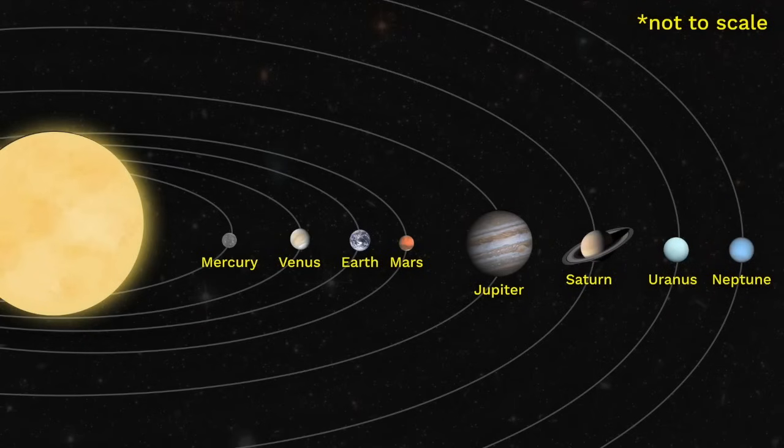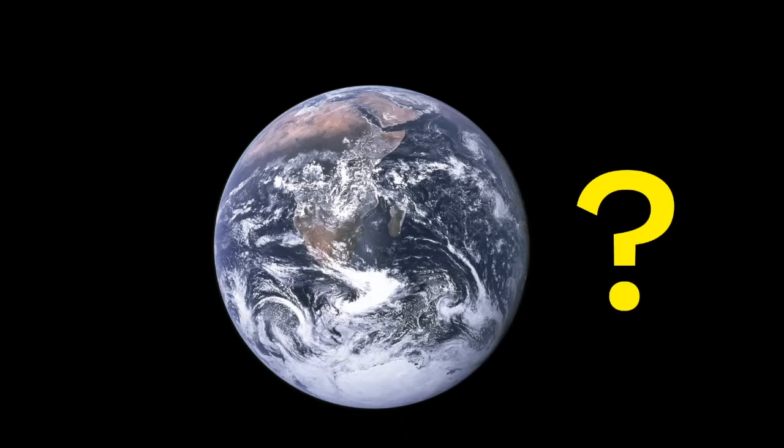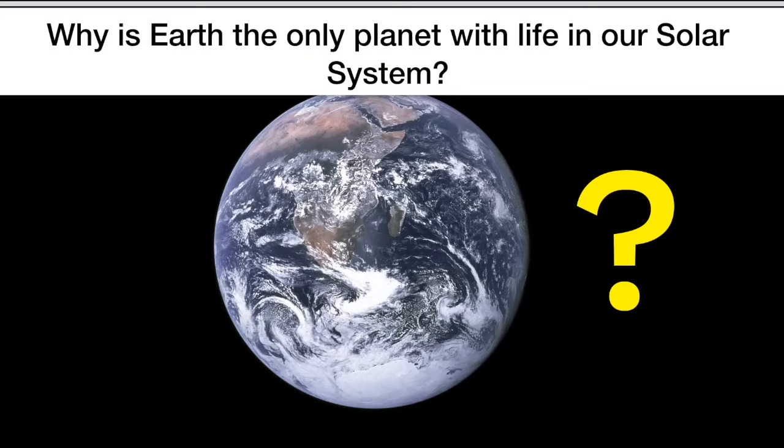That's a great question. You might know that our solar system has eight planets orbiting the Sun: Mercury, Venus, Earth, Mars, Jupiter, Saturn, Uranus, and Neptune. But our planet, the Earth, is special. It's the only planet that has life. Why is that? Why is Earth the only planet with life in our solar system?